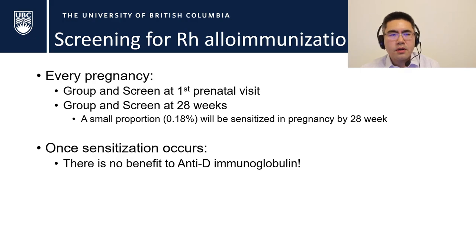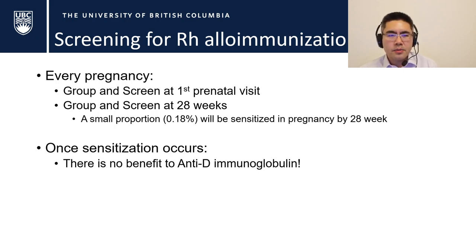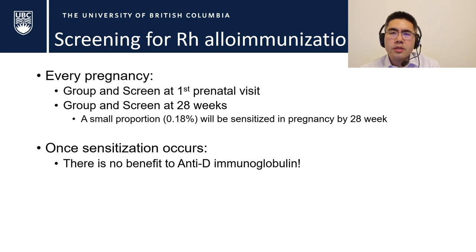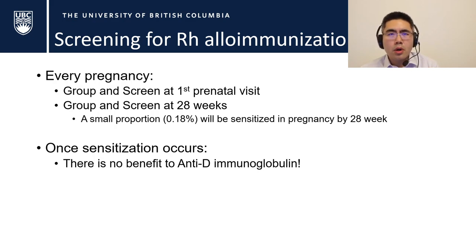How do we screen for this? We screen in every pregnancy — we do a group and screen at the first prenatal visit. The screen tells us the major blood groups and whether the mother is Rh-positive or Rh-negative, while the antibody screen looks for various subgroups. For Rh-negative mothers, we repeat a group and screen at 28 weeks, because about 0.18% will be sensitized in pregnancy by 28 weeks. Some jurisdictions have chosen not to repeat this 28-week screen, but currently in Canada we do recommend it. I've personally seen someone get sensitized before their 28-week Rhogam shot. Once sensitization occurs, there is no more benefit to anti-D immunoglobulin — the mother is producing far more antibodies than what is given through Rhogam.